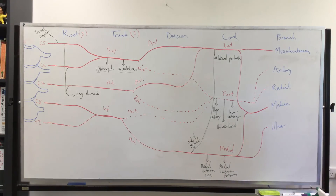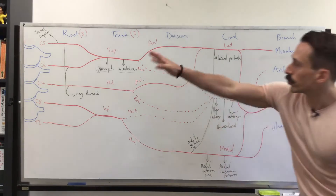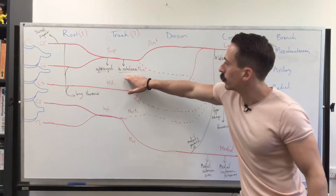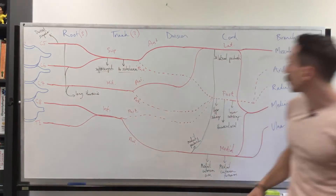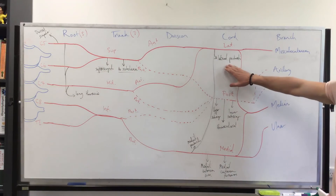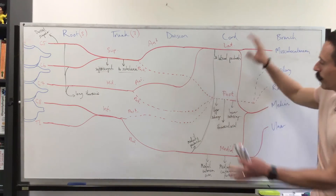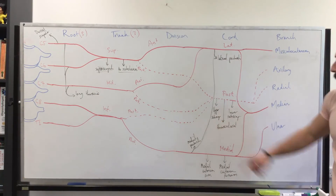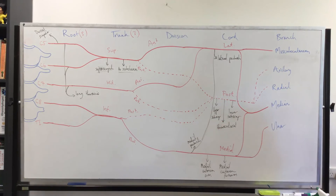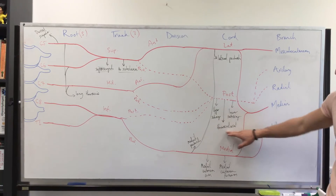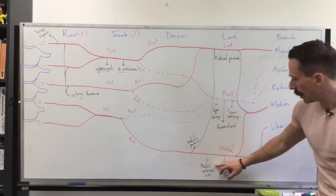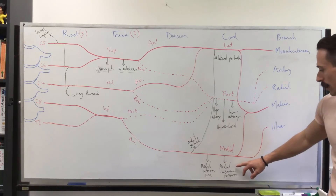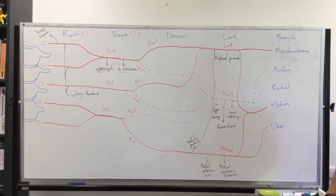Let me recap. We've got the dorsal scapular, suprascapular, nerve to subclavius, and long thoracic. We've got lateral and medial pectoral nerves — both innervating the pecs. Upper subscapular, lower subscapular, thoracodorsal innervating latissimus dorsi, and medial cutaneous nerves for the arm and forearm. These are the major branches of the brachial plexus.